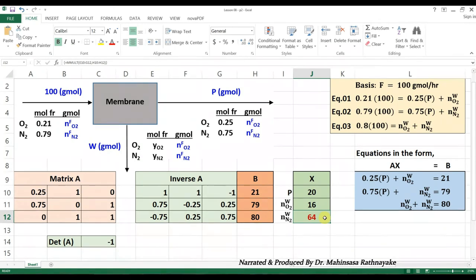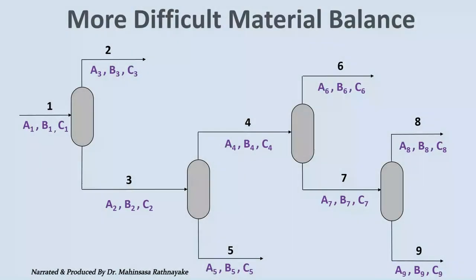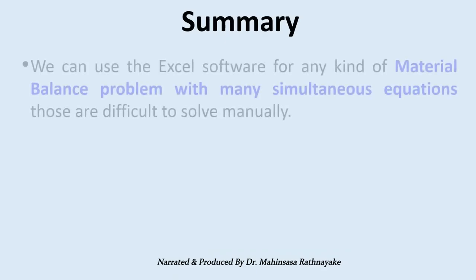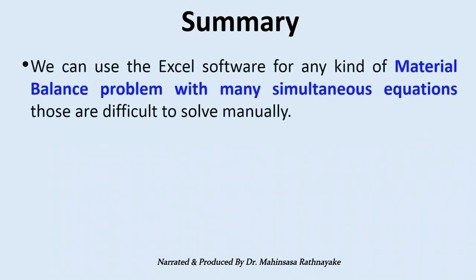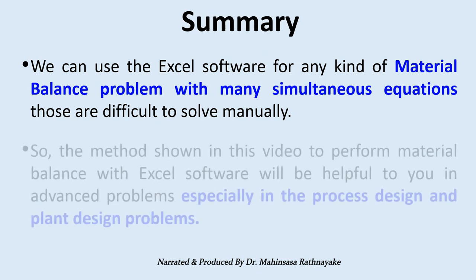It is true that we can also solve these three equations manually. Applying the equation capital F equals P plus W, we can easily find the manual solution for this problem. But imagine a system with a series of distillation columns having a large number of simultaneous equations to be solved. Then again we can use the Excel software for any kind of such problems with many simultaneous equations. Those are difficult to be solved manually.